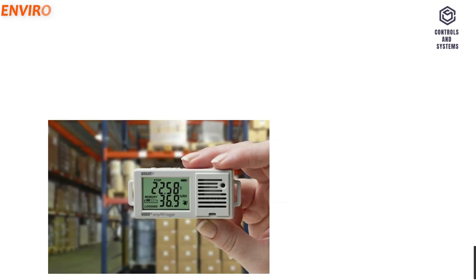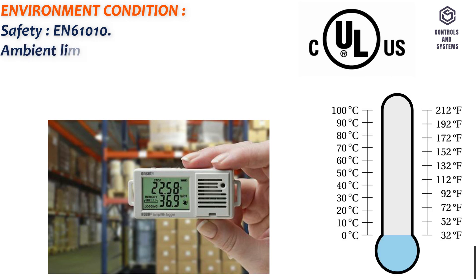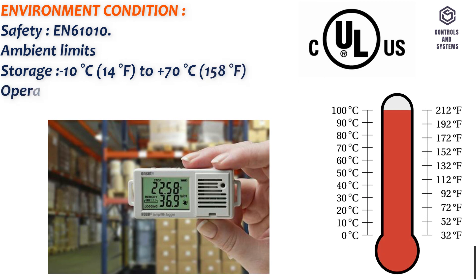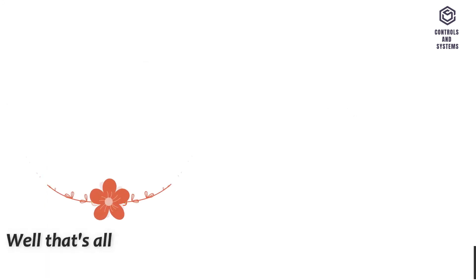Environment condition: Safety EN 61010. Ambient limits Storage: Minus 10 degrees Celsius or 14 degrees Fahrenheit to plus 70 degrees Celsius or 158 degrees Fahrenheit. Operating: Minus 10 degrees Celsius or 14 degrees Fahrenheit to plus 50 degrees Celsius or 122 degrees Fahrenheit. Well that's all we have for you today.